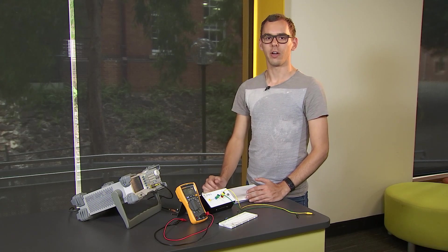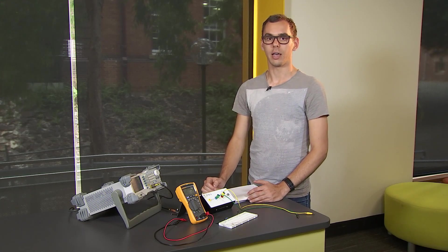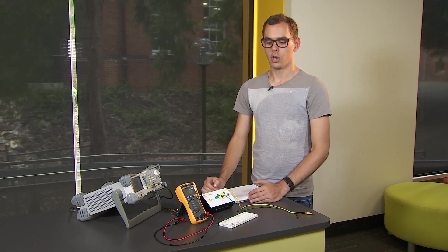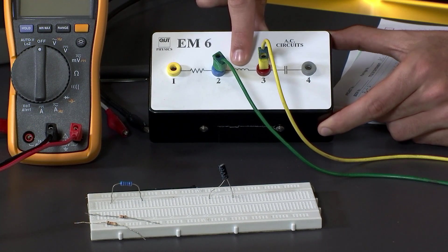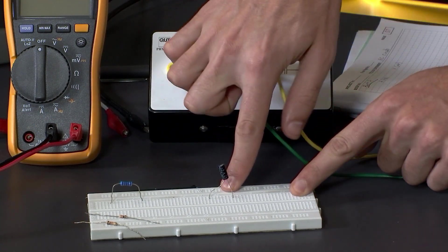In this section of the experiment, we are going to analyze the resonance in RLC series circuits using an external resistor, the inductor from the test circuit, and an external capacitor.